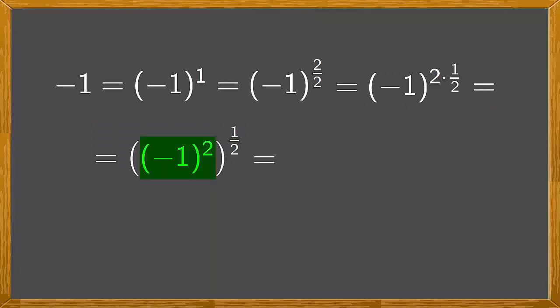Now minus 1 raised to the power 2 or minus 1 squared is 1. And then this is raised to the power of a half. So we have the square root of 1 which is 1.